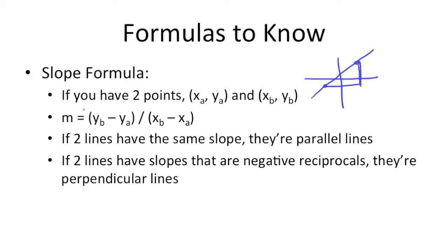So if you have two points, (xa, ya) and (xb, yb), to calculate the slope, you'd need the difference in y's over the difference in x's.